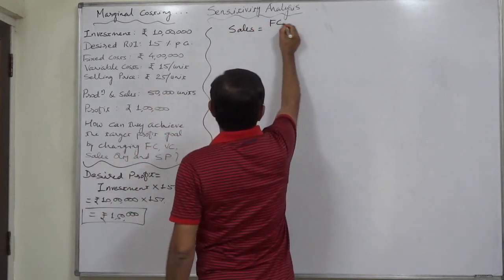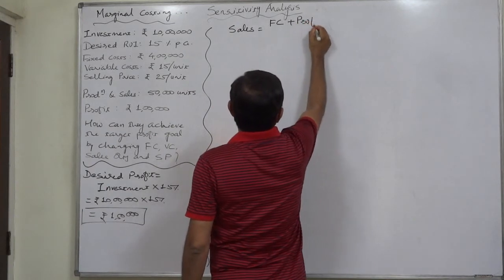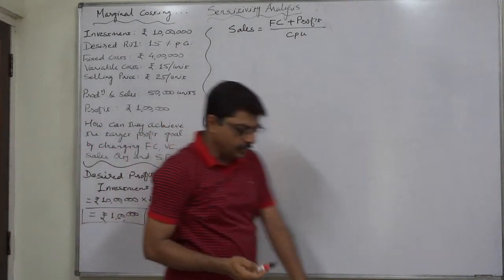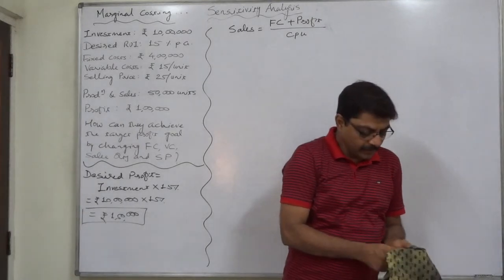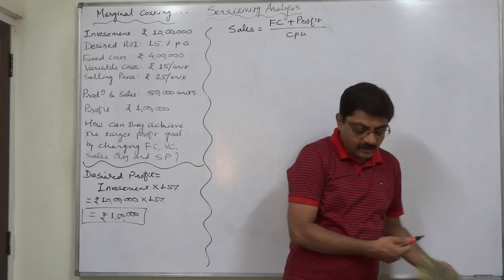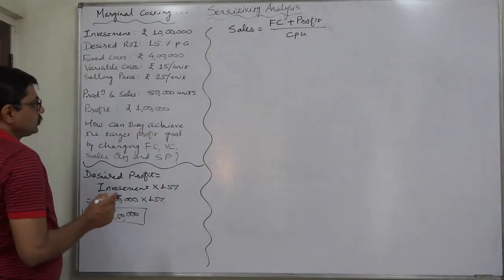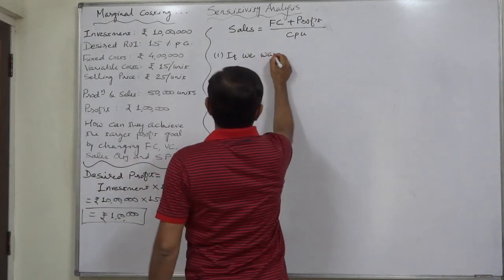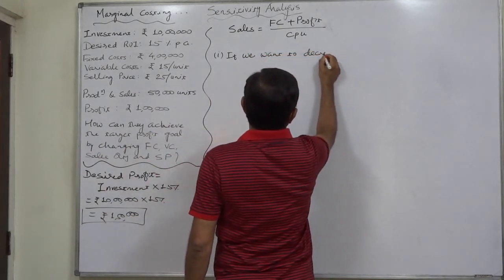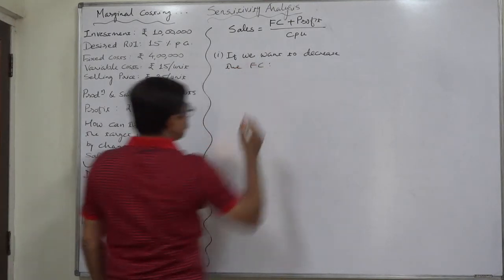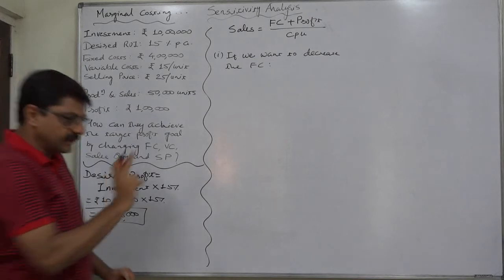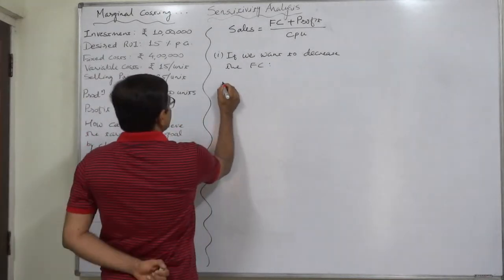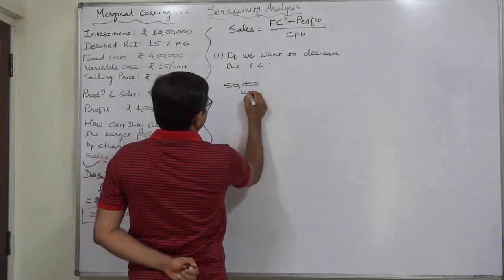Sales equals to fixed cost plus profit divided by contribution per unit. Now in this formula, we have to take profit of 150,000, the desired profit, not the actual profit, because ultimately all these sensitivity analyses are for achieving the desired ROI or desired profit. Now first of all, if we want to change or want to decrease the fixed cost, what should be the revised fixed cost? The main problem at this time is what should be the revised fixed cost, or by what amount the fixed cost should be decreased? Let us substitute the figures in the formula.